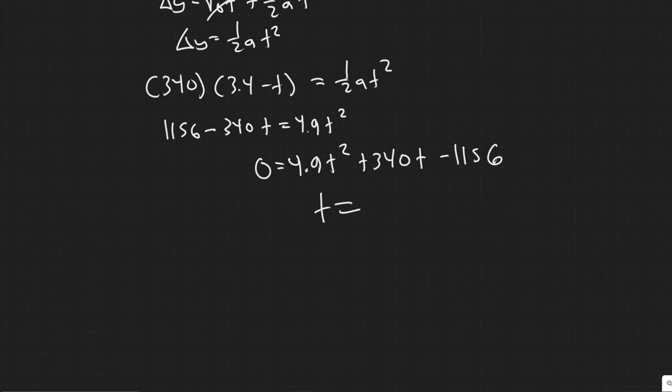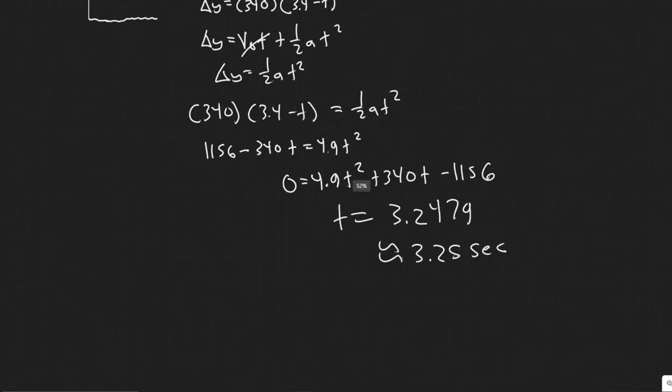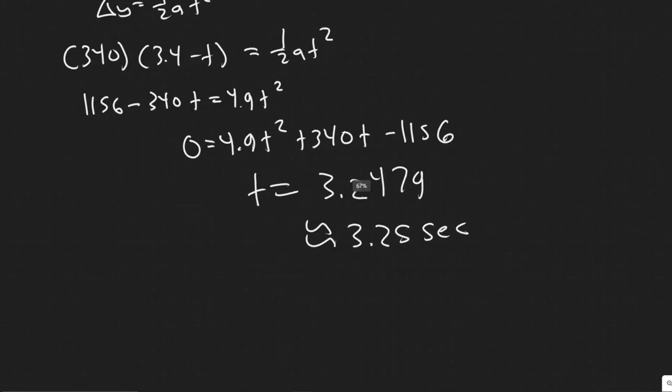Using a TI-84 graphing calculator, plug in the quadratic and find where it crosses zero. You'll find two values — one positive and one negative. Since time can't be negative, we take the positive solution: t equals approximately 3.2479 seconds, or about 3.25 seconds.